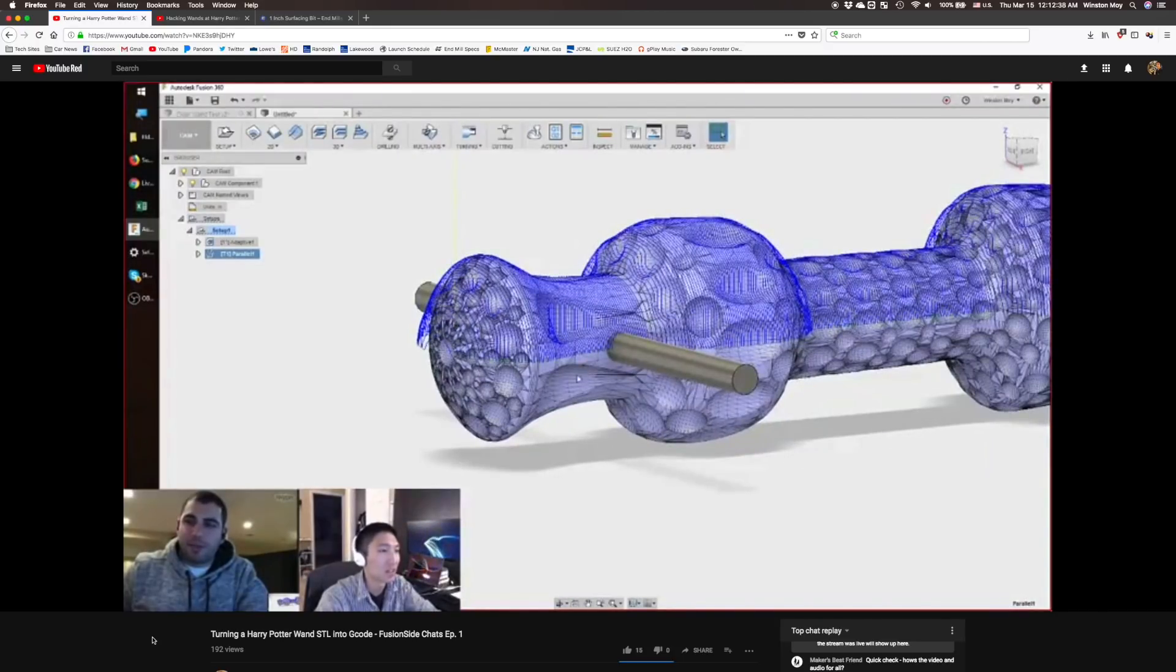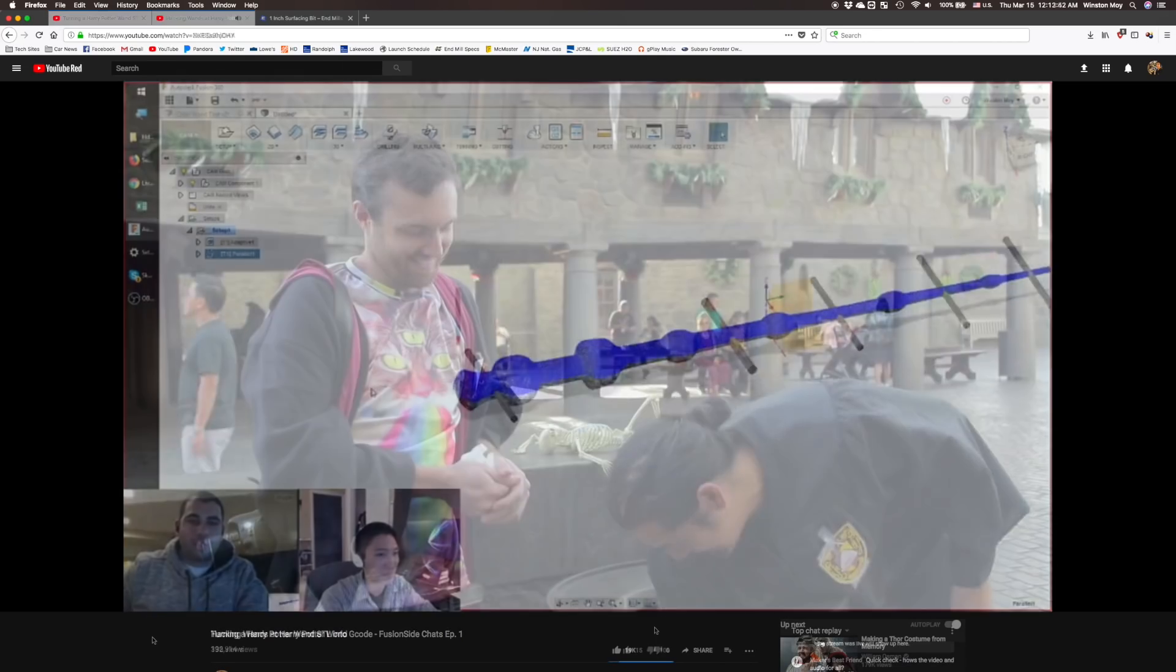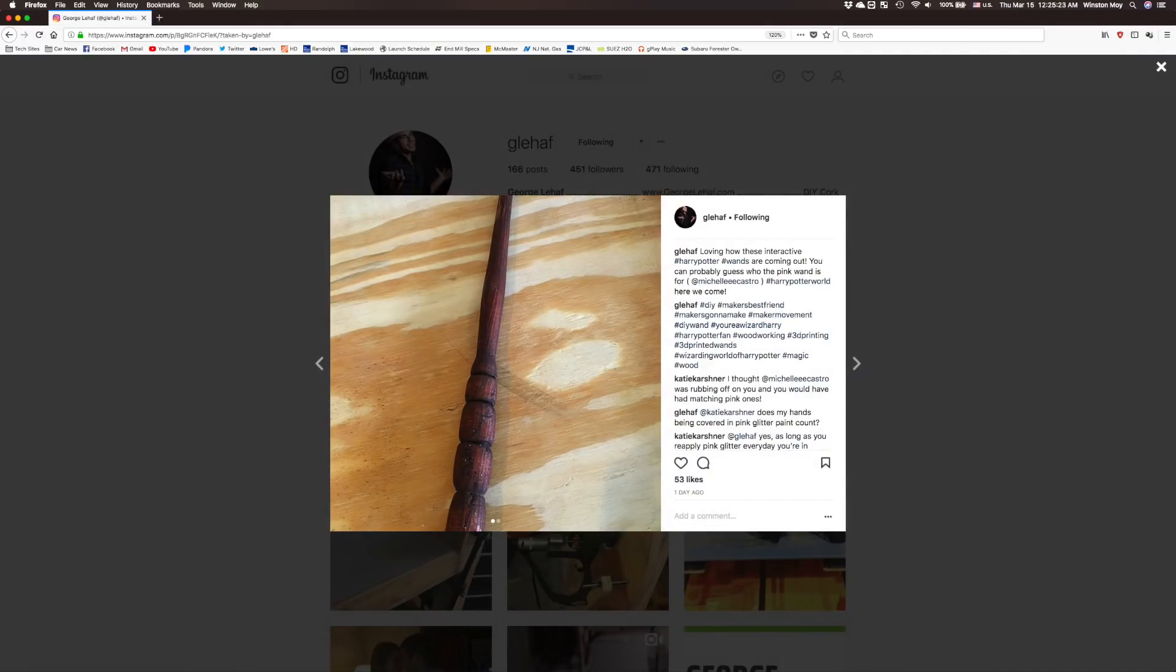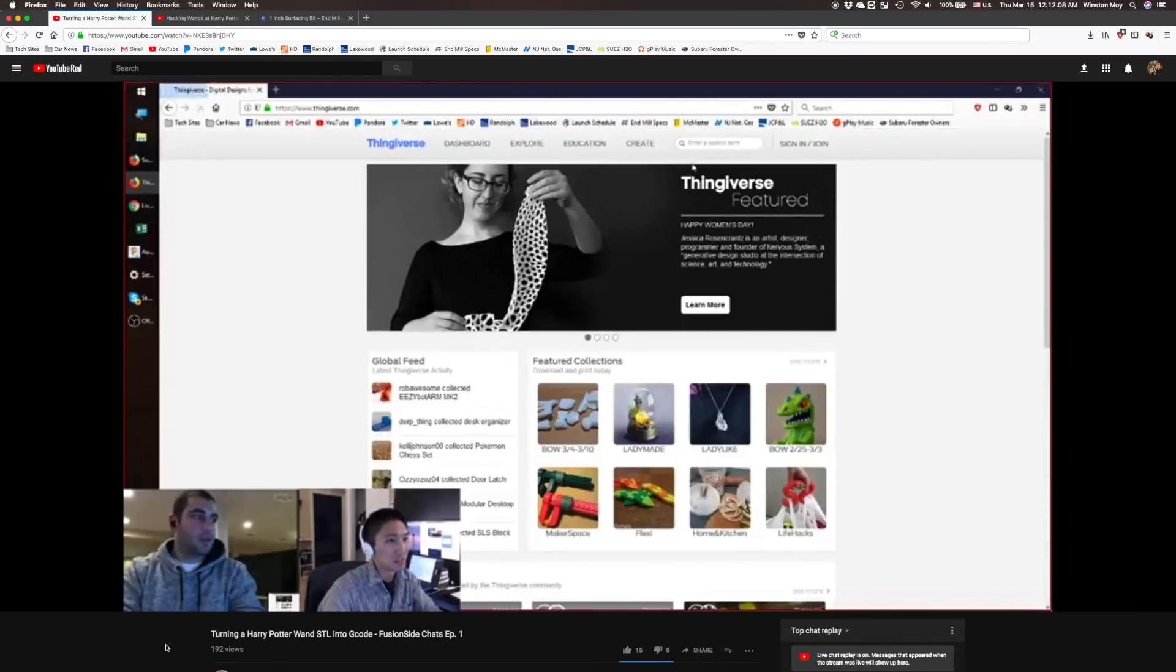My buddy George is going to Orlando this weekend and wanted some DIY wands to bring to the Wizarding World of Harry Potter a la William Osmond, except less crappy. While he toyed around with handmade and 3D printed designs, I set off to one-up him with a CNC machined version.